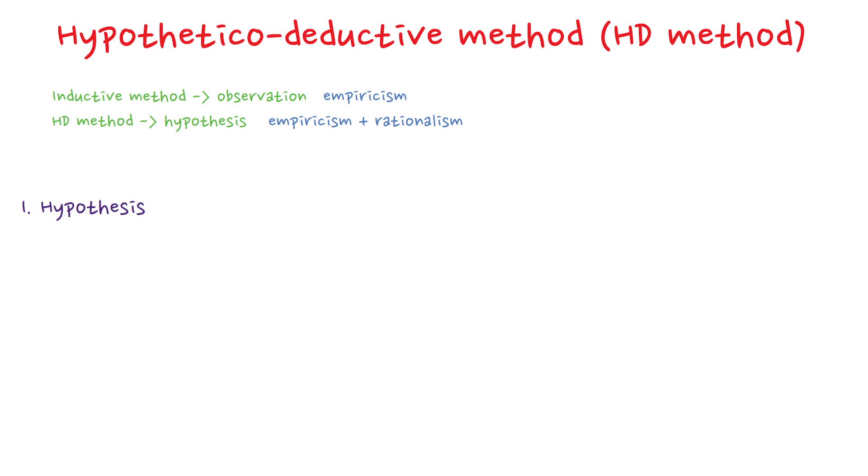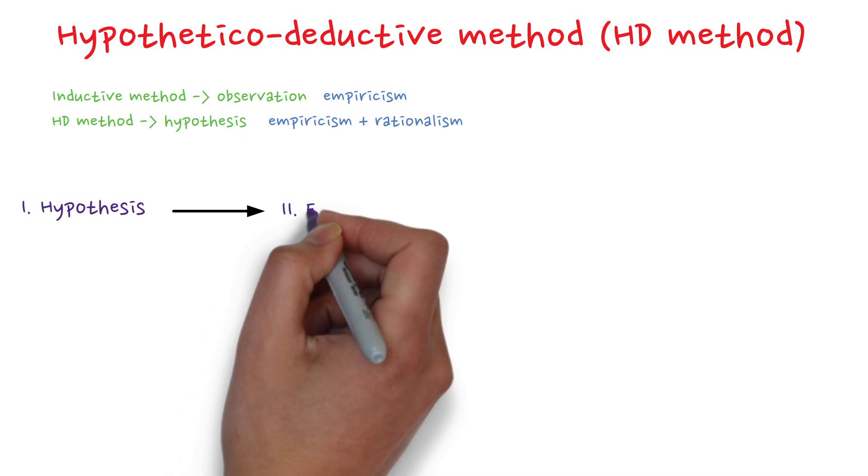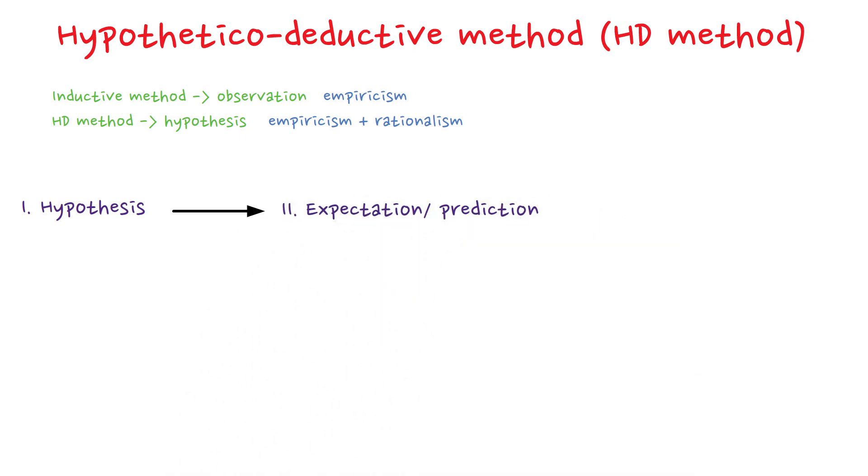From this hypothesis, a specific expectation is logically derived. This step is known as deduction. Essentially the question becomes, if this hypothesis is true, what should we expect to observe?